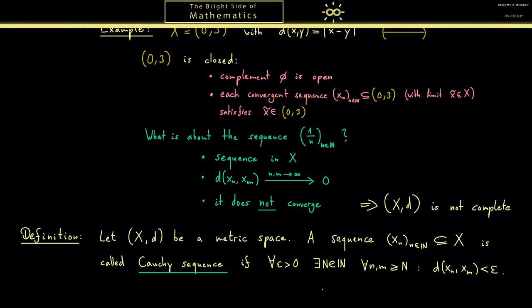However, we already know the problem: this does not work in general. Now the nice spaces where this actually works we call complete. Therefore we say here all Cauchy sequences converge. In other words, something like above can't happen then.